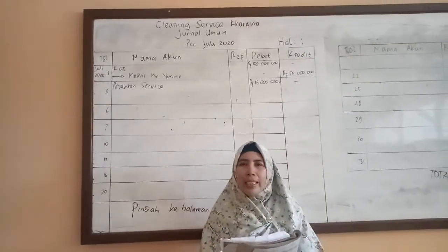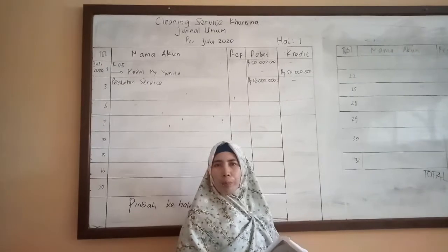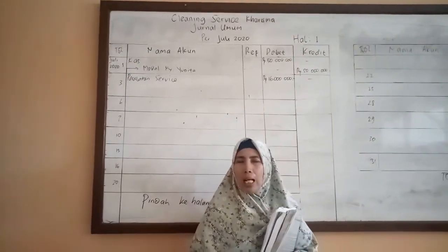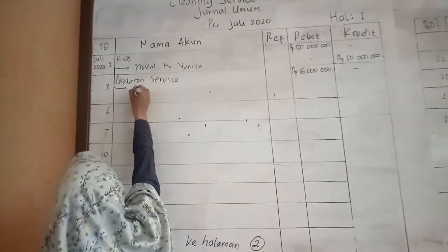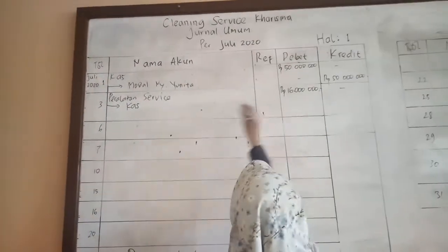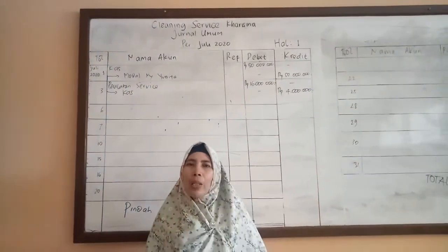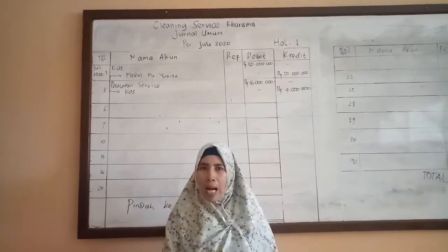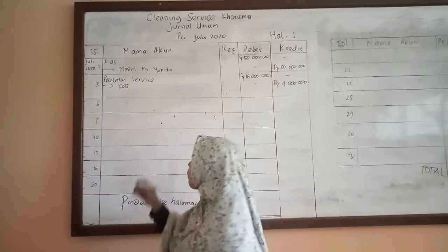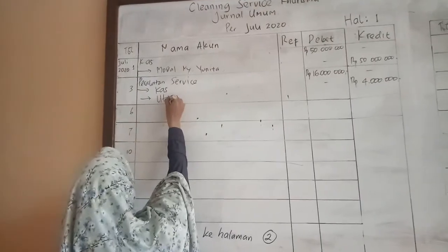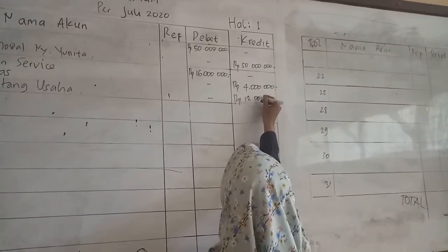Perusahaan membayar pembelian peralatan sebesar Rp4 juta, artinya kas berkurang. Kas termasuk kelompok harta, harta berkurang pada posisi kredit, sebesar Rp4 juta. Sisanya dilakukan secara kredit, berarti hutang. Hutang bertambah pada posisi kredit, belum dibayar, sebesar Rp12 juta.